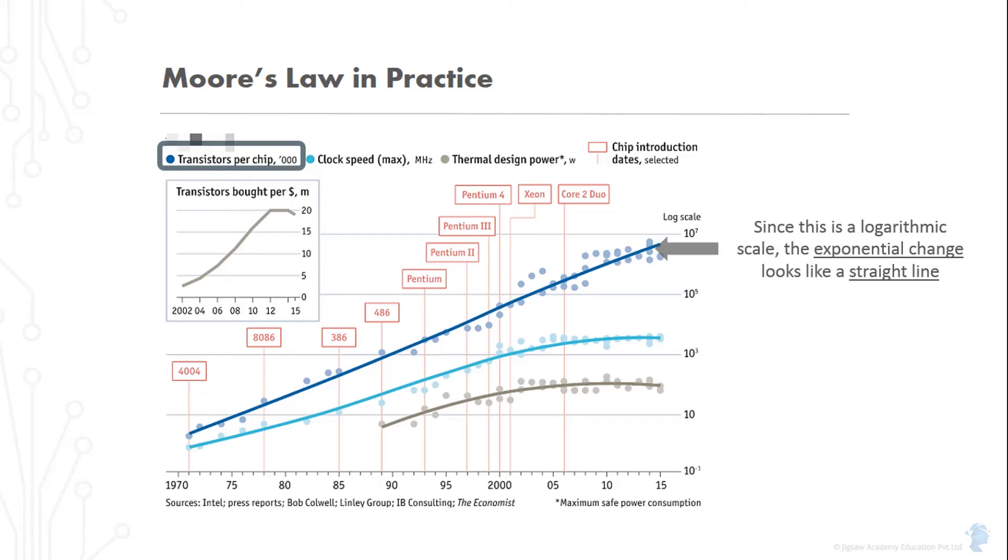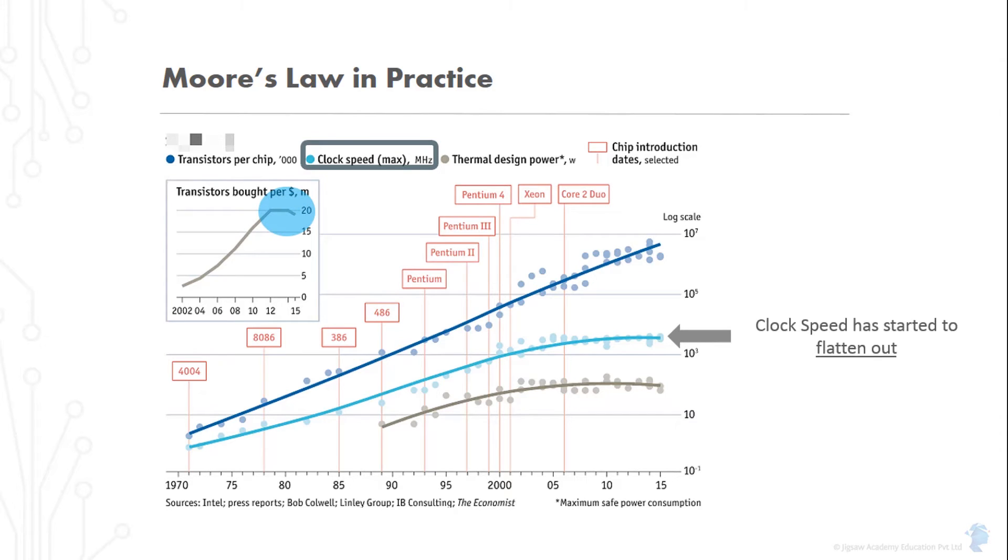But you can see that it's not just the number of transistors that's been growing. Clock speed has followed close behind, although that's starting to flatten out. And so has the number of transistors that a single dollar would buy you. Despite this flattening, I think it is still fair to say that there's a lot of life left in Moore's law yet. And we'll continue to see massive improvements in chip costs for a considerable time to come.